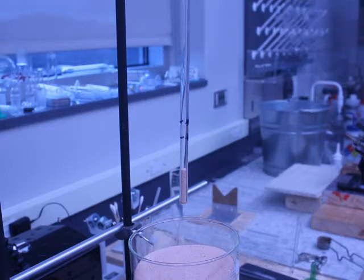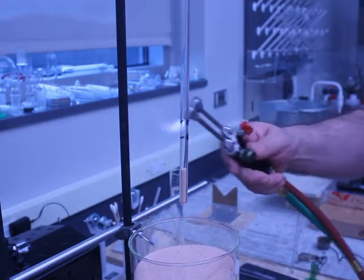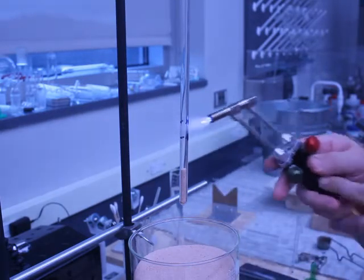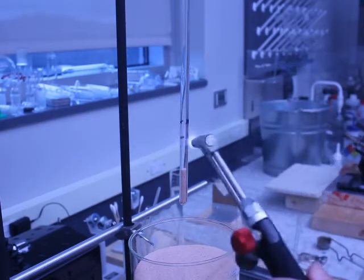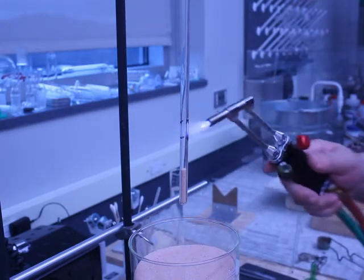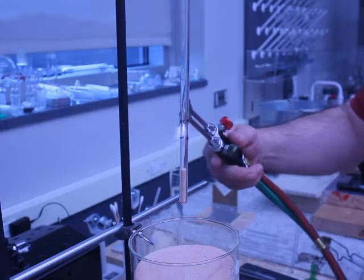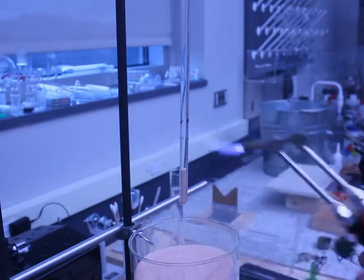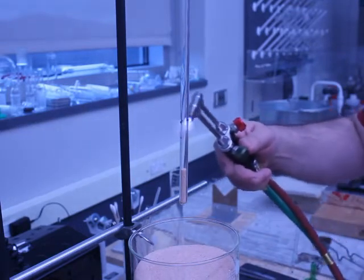So what I'm going to do now is I'm going to be moving the hand torch back and forth, warming up this glass. And I'm trying to only heat a relatively small area of the glass, but I don't want to get it too hot too quickly, because since the glass is under vacuum, once it becomes liquid, once it becomes soft, it's going to collapse on itself. But that's actually part of the plan.